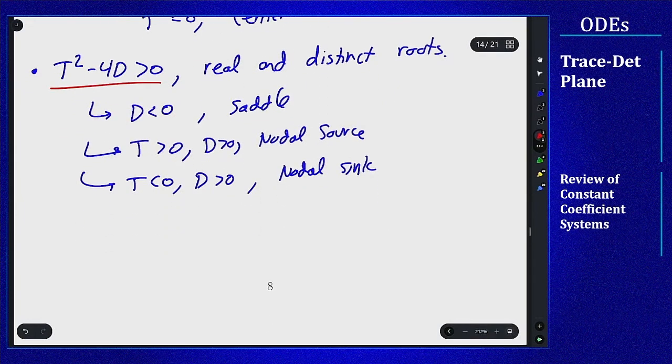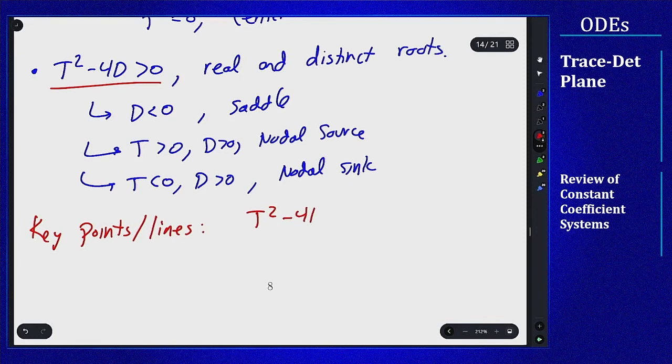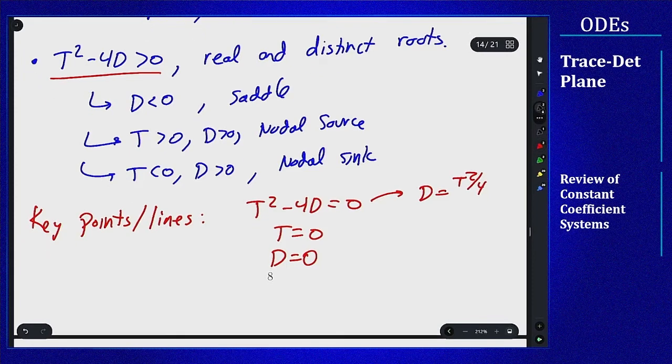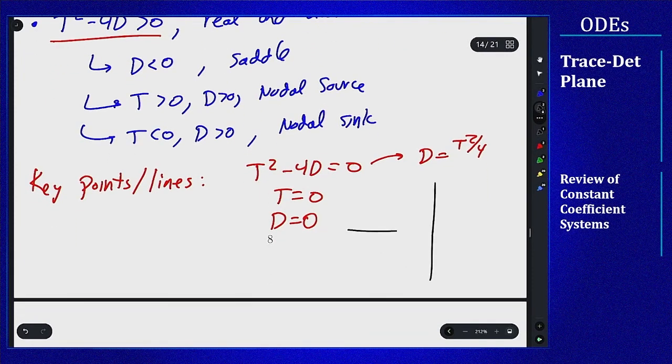And so you can see that the sort of key factor here is this relationship, and this being equal to 0 means I have repeated eigenvalues. So the key point here, the key points and lines to be aware of, are T squared minus 4D equals 0, the T axis, and the D axis. In general when we plot this out, we're going to write this as D equals T squared over 4, and then we will draw a pair of axes, and we will put T on the horizontal axis, and D on the vertical axis, and use that to sketch out our graph.